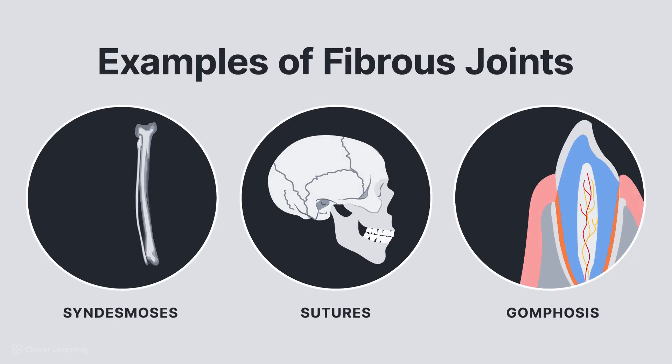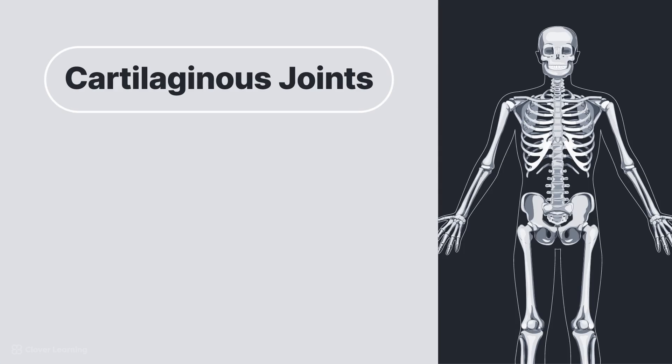Examples of syndesmosis include the distal tibiofibular joint, sacroiliac, carpal, and tarsal joints. Examples of sutures are found in the skull. An example of gomphosis is the roots of the teeth that lie in the alveolar sockets, as these are held in place by fibrous periodontal ligaments.